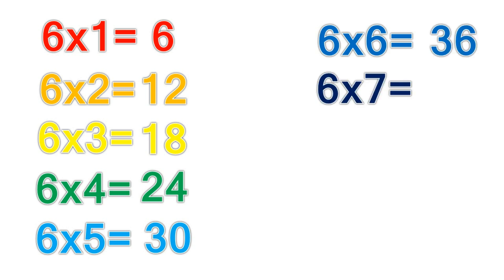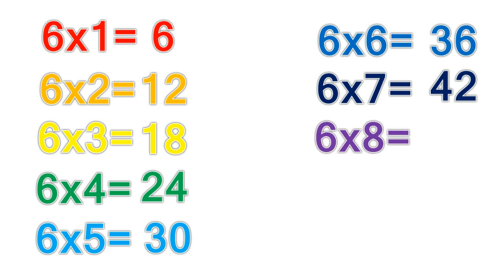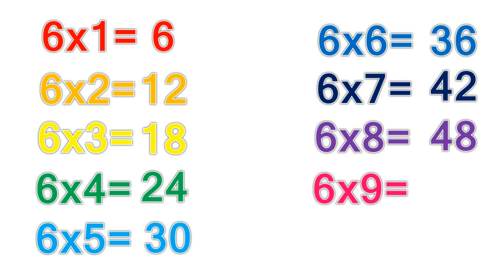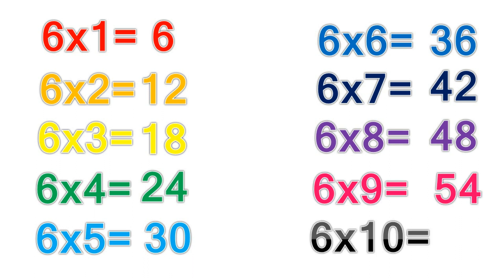6 times 7 equals 42. 6 times 8 equals 48. 6 times 9 equals 54. 6 times 10 equals 60.